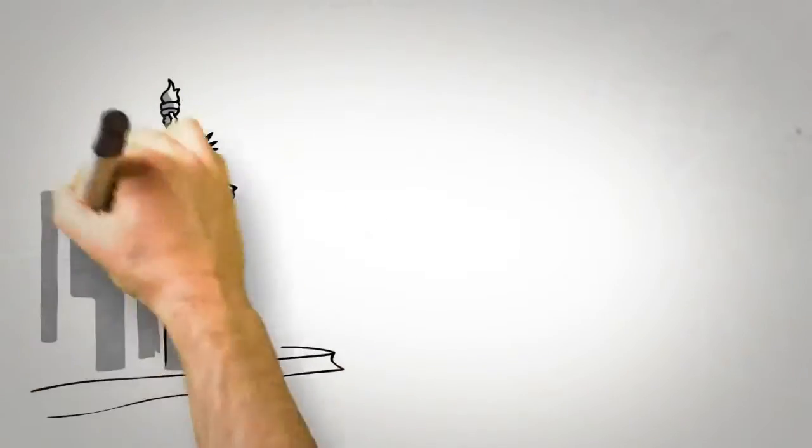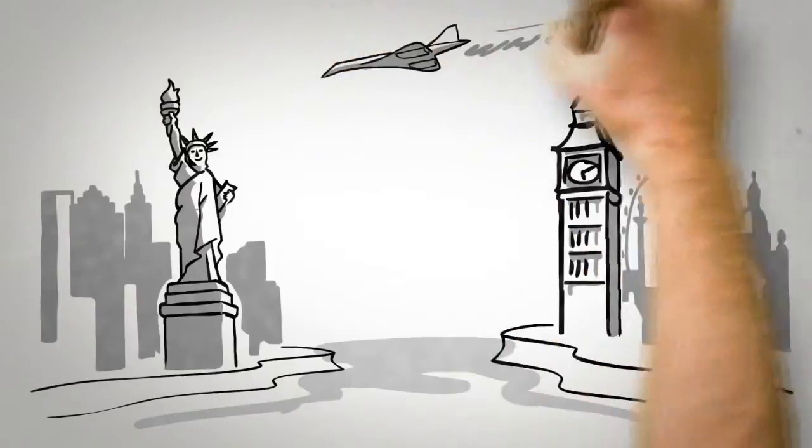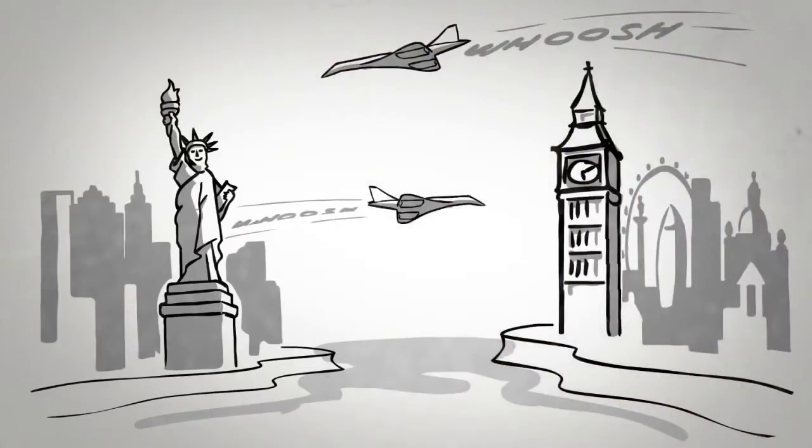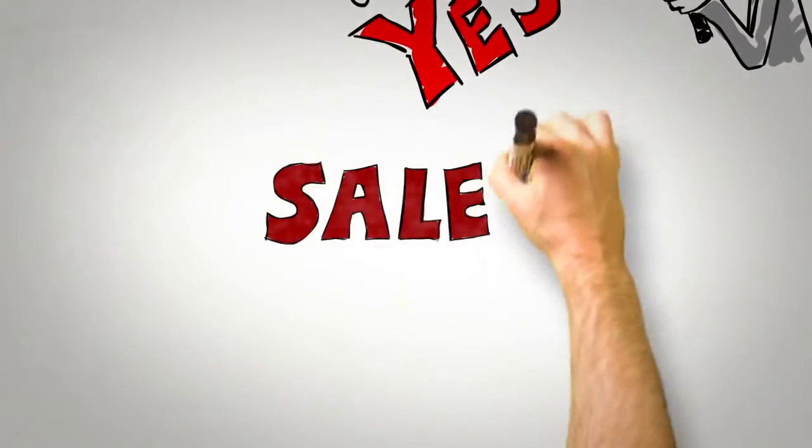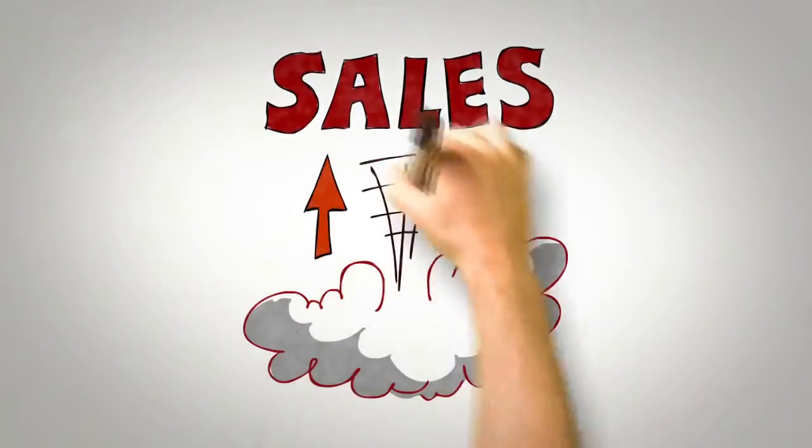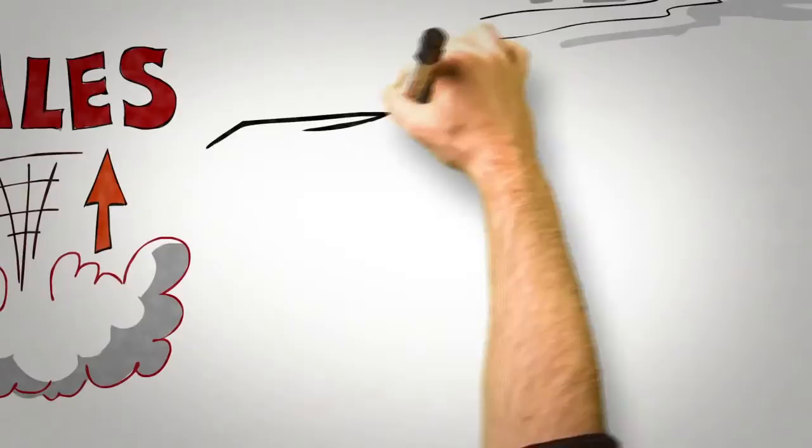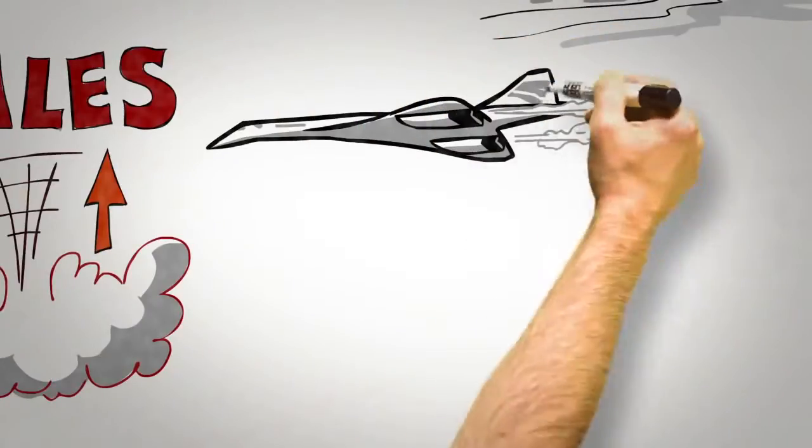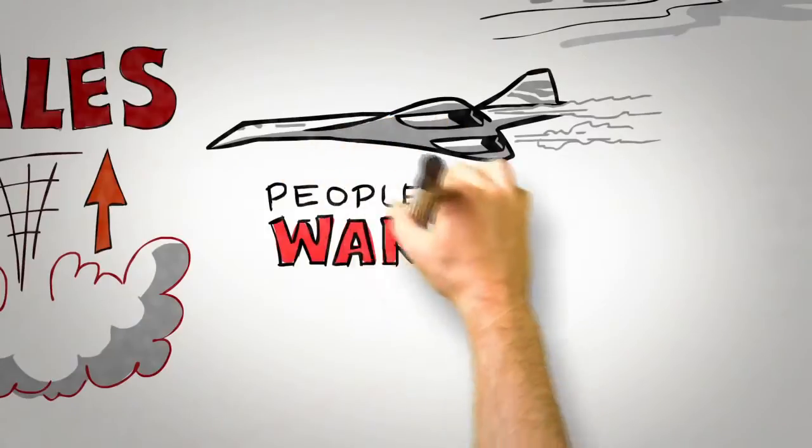When British Airways announced in 2003 that they would no longer be operating the twice-daily London-New York Concorde flight because it had become uneconomical to run, sales the very next day took off. Notice that nothing had changed about the Concorde itself. It certainly didn't fly any faster, the service didn't suddenly get better, and the airfare didn't drop. It had simply become a scarce resource, and as a result, people wanted it more.